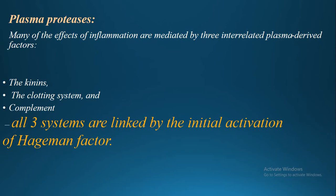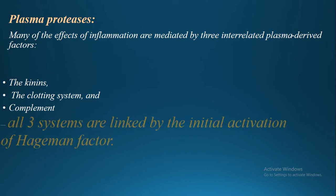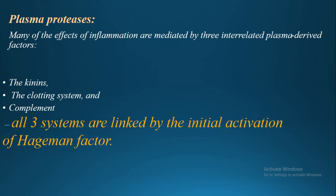The plasma proteases — enzymes which have effects on inflammation — are three interrelated plasma-derived factors: clotting factors, complement factors, and kinins. All three systems are linked by the initial activation of Hageman factor, which is Factor 12.